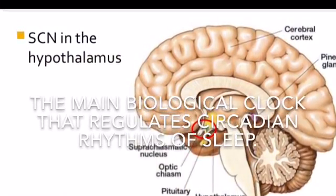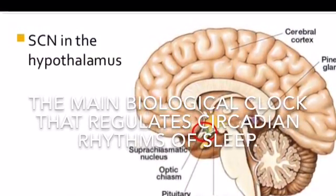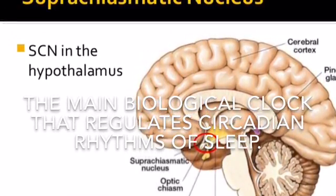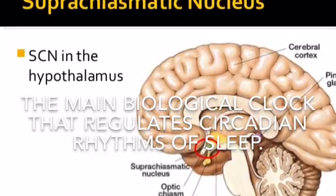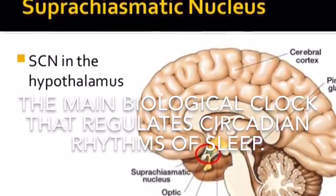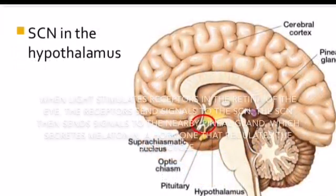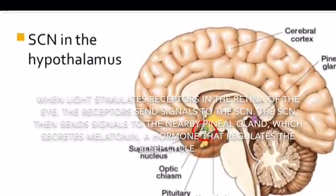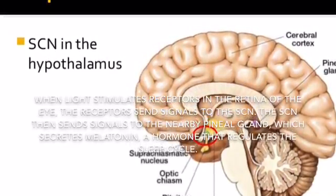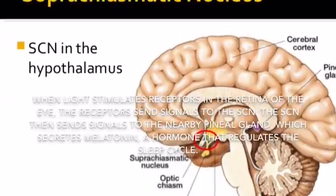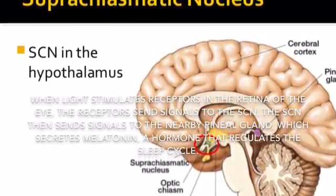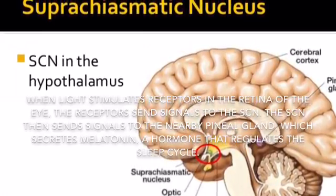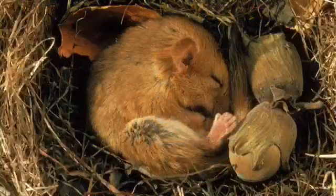The suprachiasmatic nucleus (SCN) is the main biological clock that regulates circadian rhythm and sleep; it is found in the hypothalamus. When light stimulates receptors in the retina of the eye, the receptors send signals to the SCN. The SCN then sends signals to the nearby pineal gland, which secretes melatonin — a hormone that regulates the sleep cycle.